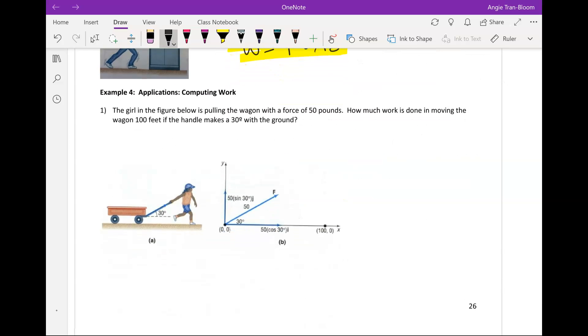Example 4. The girl in the figure below is pulling a wagon with the force of 50 pounds. This is the force of 50 pounds. How much work is done in moving the wagon 100 feet if the handle makes 30 degrees with the ground? So it makes 30 degrees with the ground. The handle makes that and she's moving 100 feet.